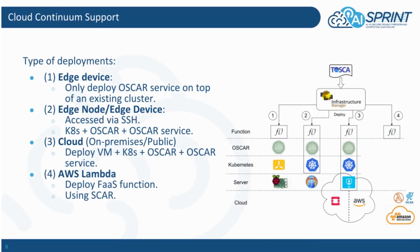Toscarizer enables the application manager to access the cloud continuum. It supports four types of deployments. The first one is the edge device, where only an OSCAR service is deployed on top of an existing OSCAR cluster, probably deployed on top of a Kubernetes minified version such as K3S.